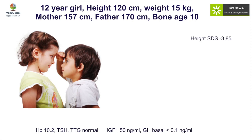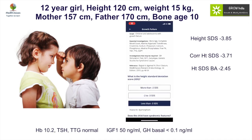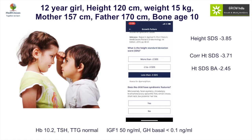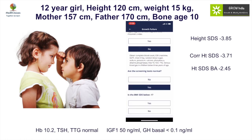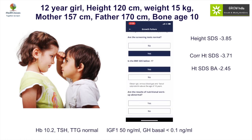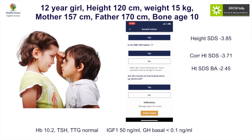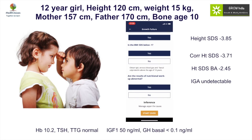For a child whose height SDS is minus 3.85, with a compromised corrected height SDS and height SDS for bone age, going through our approach pathway: height is less than minus 3 SD, no syndromic features, no disproportion, and screening tests were normal. The next question is whether BMI SDS is below minus 1 — yes, indicating a nutritional problem. IgA levels were found to be low, which clearly shows this algorithm would have picked up the possibility of IgA deficiency.